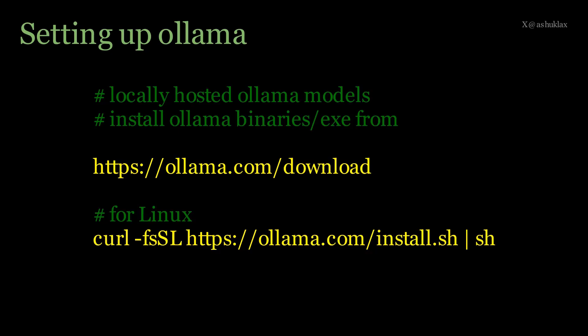Let's go through it line by line. To install Ollama and Ollama models locally on Windows, first you need to download the Ollama binaries or EXE from the website — browse to https://ollama.com/download. And if you want to install it on Linux, issue the command: curl -fsSL ollama.com/install.sh, which downloads the install script and pipes it to the shell for execution. That's how you install Ollama on your Linux machine.